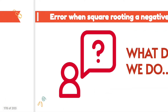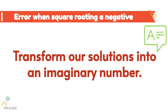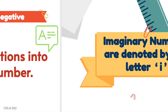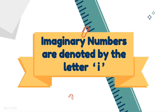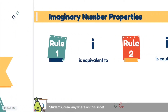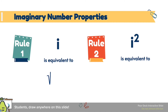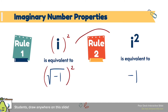We're going to get an error when we take square roots, so we transform our solutions into an imaginary number. The imaginary number is denoted by the letter i. i is actually equivalent to √(-1) — that's rule 1 — and i² is equivalent to -1. So if I were to square √(-1), I get i², and that turns into -1 because squaring a square root makes those things cancel.